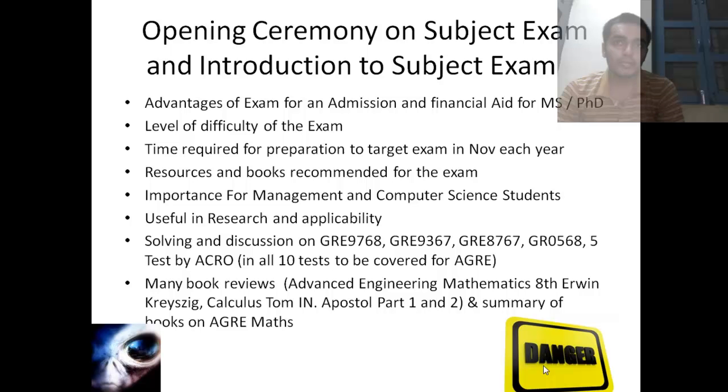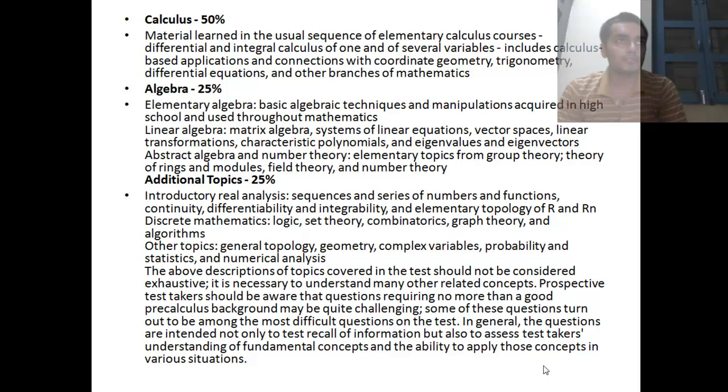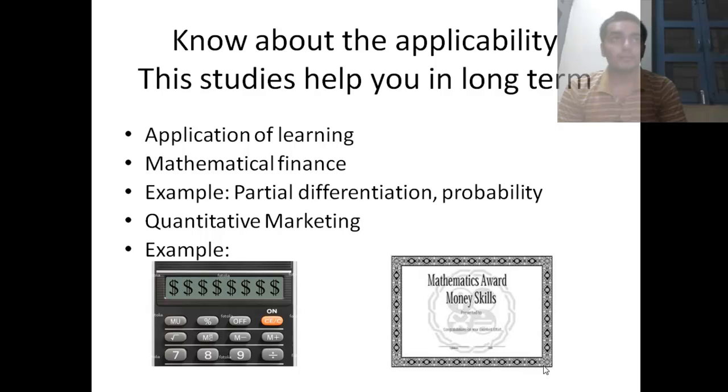We are also going to look at the five papers disclosed by the ETS themselves and some of the books. The subject GRE has around 50% of calculus, 25% of algebra and the additional topics are like 25%. Whatever we are going to study in the course is going to be highly practical and I am going to take examples and questions from mathematical finance and the application for example of partial differentiation and probability in finance and quantitative marketing. So in the long term it is going to teach you a lot.